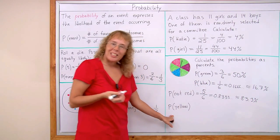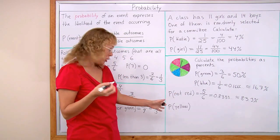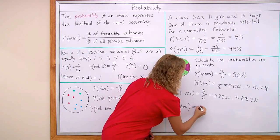And the probability of spinning yellow. Well, there's no yellow. Impossible event. The probability is zero percent.